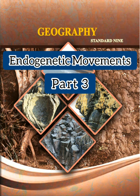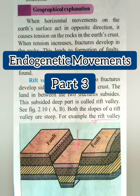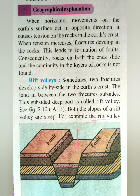Hello students, welcome to Standard 9 Geography. Let us continue with Lesson 2 of Geography — Endogenetic Movement, Part 3. In the previous lecture, we have seen how block mountains form and their examples, such as the Black Forest Mountain and the Meghalaya Plateau. Now in this lecture, we are going to study the Rift Valley.